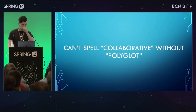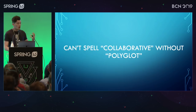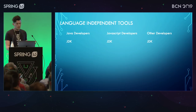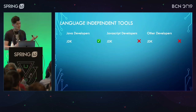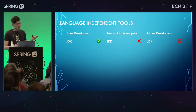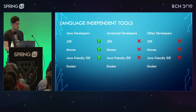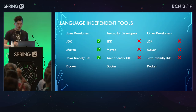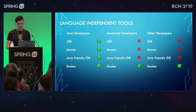However, it's not really going to mean anything unless you can allow JavaScript developers to use tools they're familiar with to write these contracts without having to learn a whole new stack. What are some language-independent tools? Java developers obviously have their JDK installed, so they can build Groovy contracts. But JavaScript developers and others probably don't. Maven or Gradle — Java developers probably have it, but others don't. Same with a Java-friendly IDE. But Docker — who here has Docker installed? Almost everyone. Everyone's probably going to have Docker, and of course every developer has a text editor. So that's really all you need.